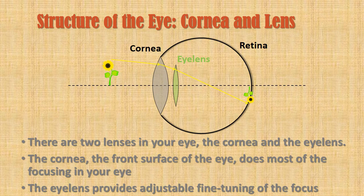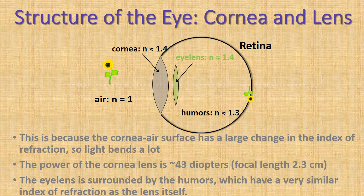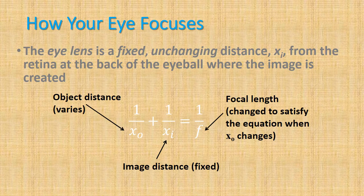There are two lenses in your eye: the cornea and the eye lens. The cornea, the front surface of the eye, does most of the focusing. This is because the cornea-air surface has a large change in the index of refraction, so light bends a lot. The power of the cornea lens is 43 diopters, with a focal length of 2.3 centimeters. The eye lens is surrounded by the humors, which have a similar index of refraction to the lens itself.